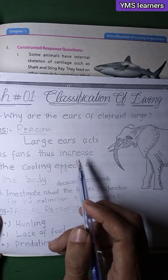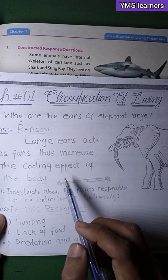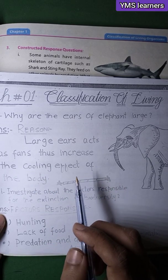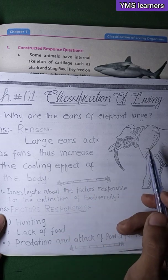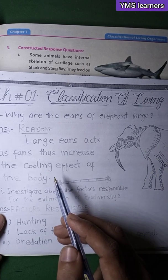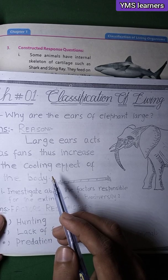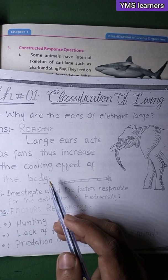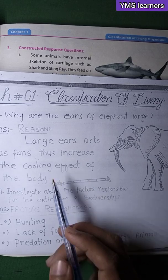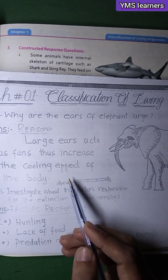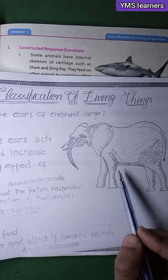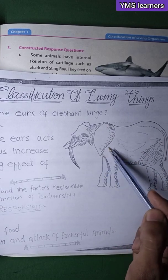Large ears increase the cooling effect of the body. In hot environments, the large surface area of elephant ears helps cool the animal down. This is why the elephant has large ears.